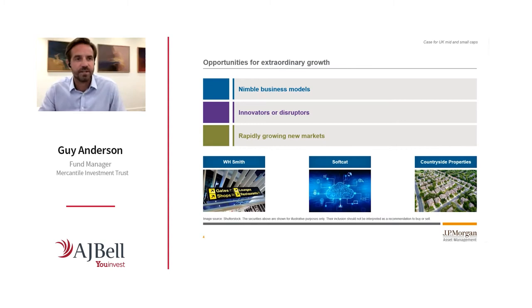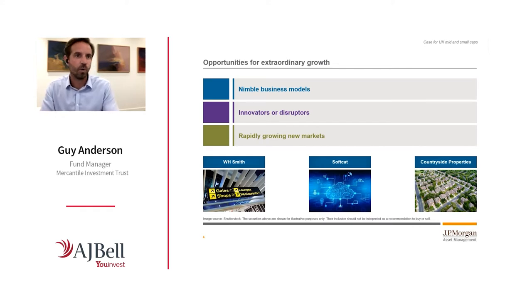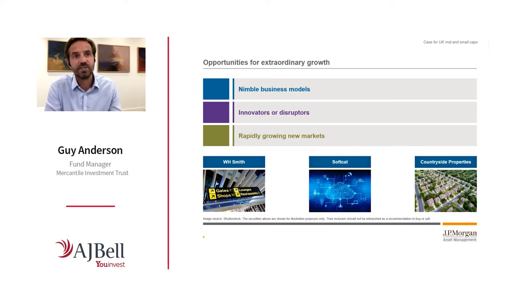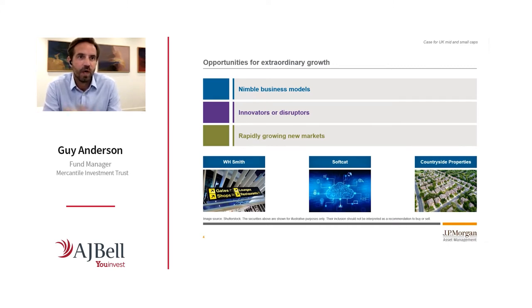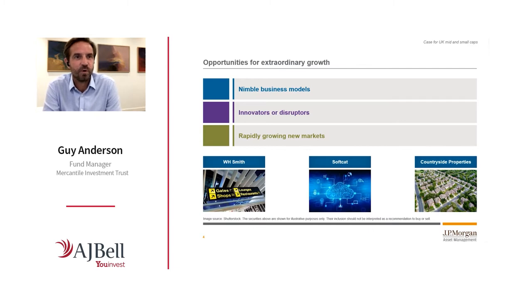Softcat is a tremendous example of that. This is a technology company that acts as the intermediary channel — the sales channel — on behalf of original manufacturers such as Microsoft, selling those products to mostly mid-sized corporates. Technology is something where adoption has gone from strength to strength, as all of us know from constantly being on webcasts and Zoom meetings. Softcat has now delivered more than 60 consecutive quarters of year-on-year organic revenue growth — that's more than 15 years of consistent revenue growth every single quarter — which is clearly highly unusual. So we're optimistic about the future prospects there.